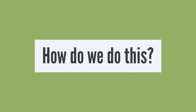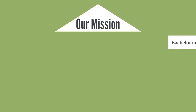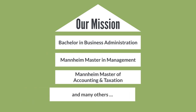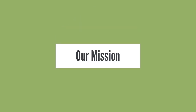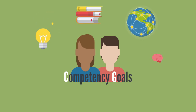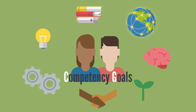How do we do this? The mission of our business school shows the direction that we want to move in. It describes what kind of person an alumni of our school is going to become. All programs offered at our school are aligned with our mission. We have defined competency goals for each program. These competency goals describe the most relevant competencies students will acquire throughout the program.